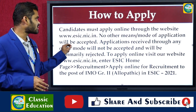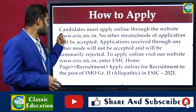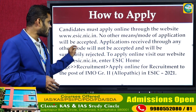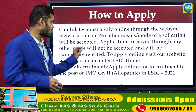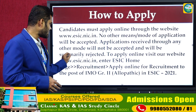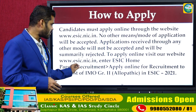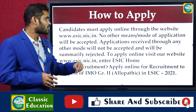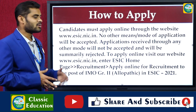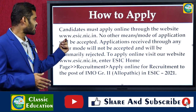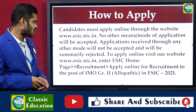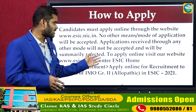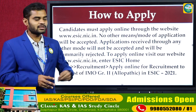How to apply: Candidates must apply online through the website www.esic.nic.in. No other means or modes of application will be accepted. Applications received through any other mode will be summarily rejected. To apply online, visit www.esic.nic.in, go to the ESIC home page, click on Recruitment, then Apply Online for the recruitment to the post of IMO Grade 2 Allopathic in ESIC, and click on Online Application.